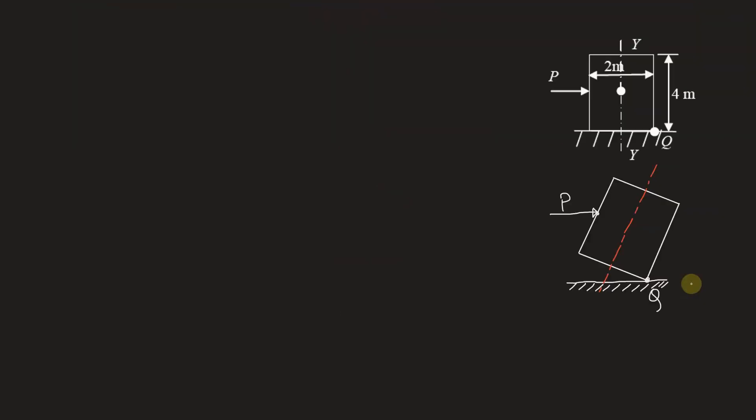Let's see how this will be solved. Now when the wardrobe rotates because of force P, we have to consider the tipping condition. So just a point is in contact with the ground, that point is point Q and the position of the wardrobe we have shown here.